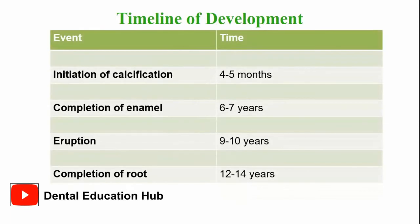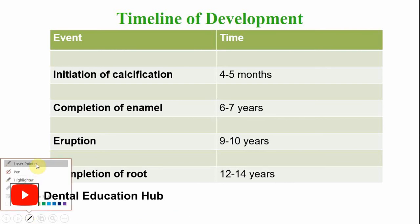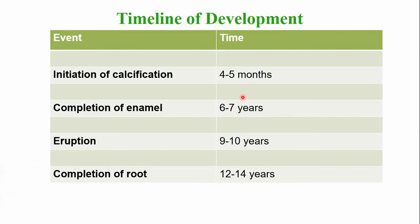The permanent mandibular canine: calcification begins at the age of 4 to 5 years and the crown is completed by the age of 6 to 7 years. The tooth emerges into the oral cavity by the age of 9 to 10 years, and root completion is around 12 to 14 years.